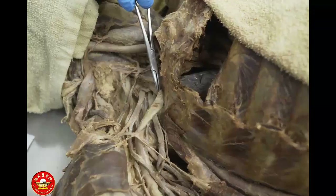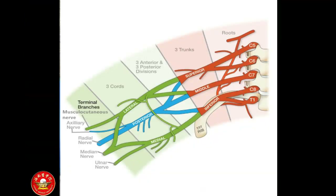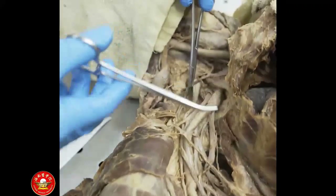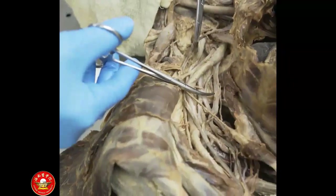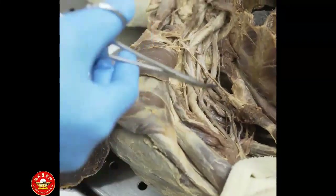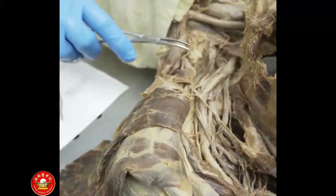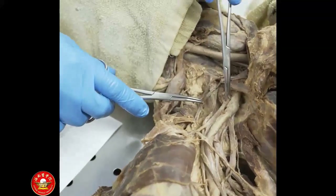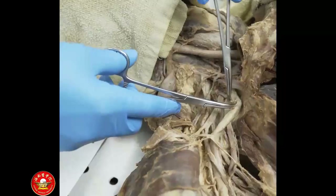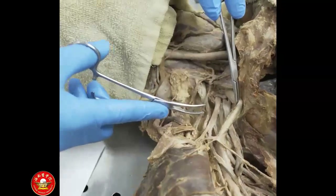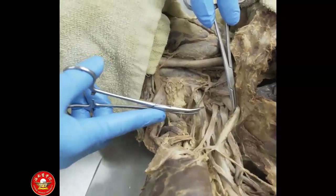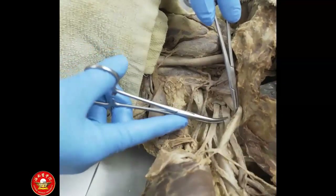We can move the artery away to expose this area. We can correlate this area with the picture: we have the trunks, the cords, and the terminal nerves — trunks, cords, terminal nerves. Let's find the trunks first. I'll move the subclavian artery away.